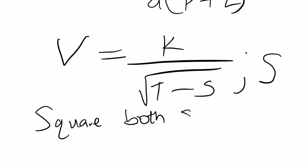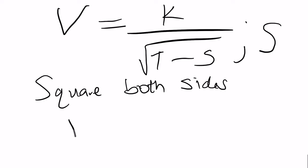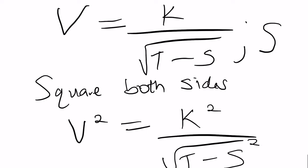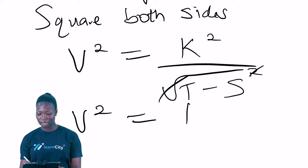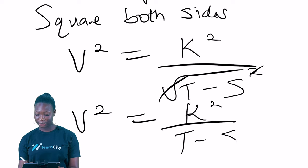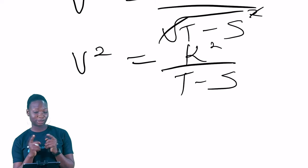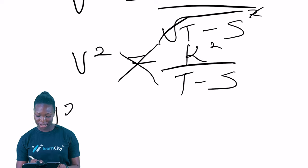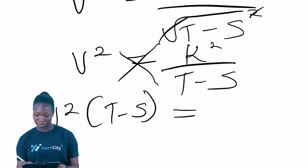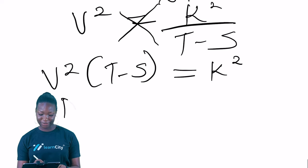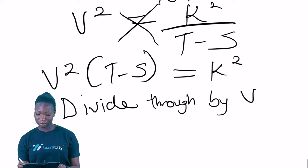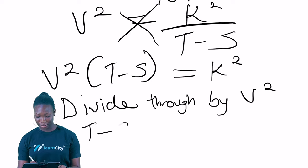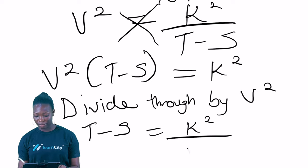Squaring both sides gives: v² = k² / (c - s). The square root is eliminated. Now we cross multiply to get: v²(c - s) = k². Then we divide through by v², giving: c - s = k² / v².